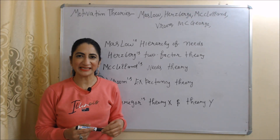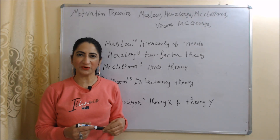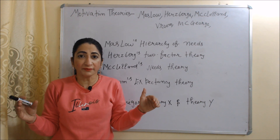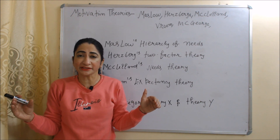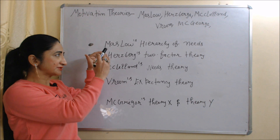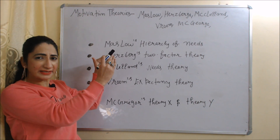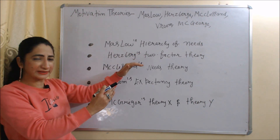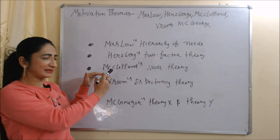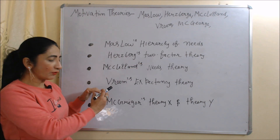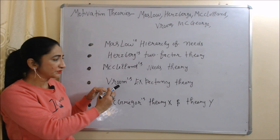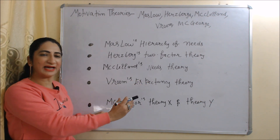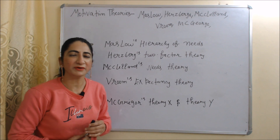Hello everyone, my name is Mini Sati. Today we are going to talk about five most important motivation theories: first is Maslow's Hierarchy of Needs Theory, second is Herzberg's Two-Factor Theory, third is McClelland's Needs Theory, fourth is Vroom's Expectancy Theory, and last is McGregor's Theory X and Y.